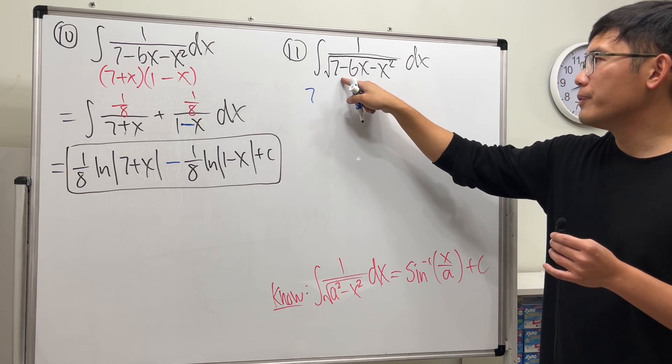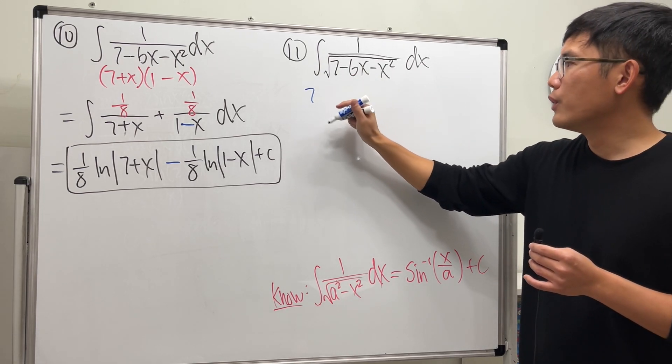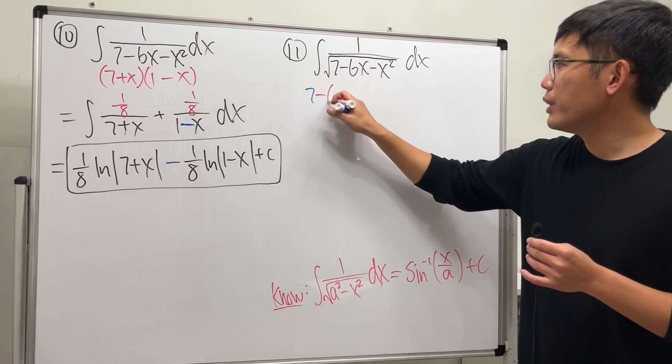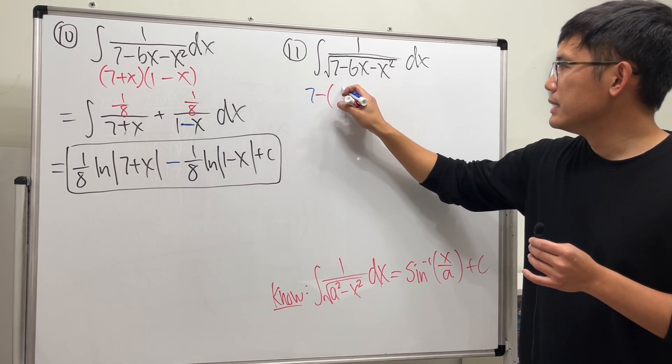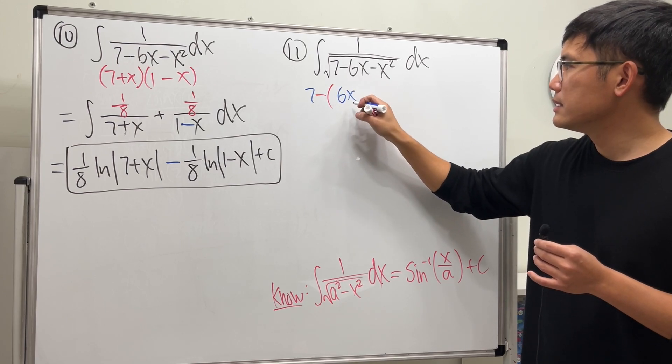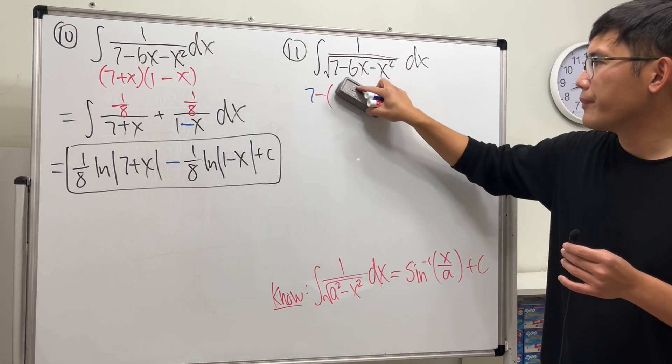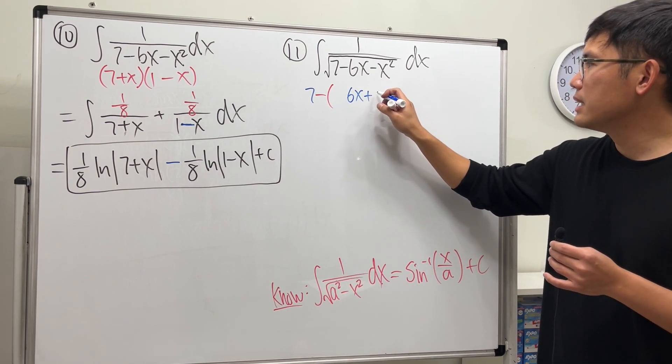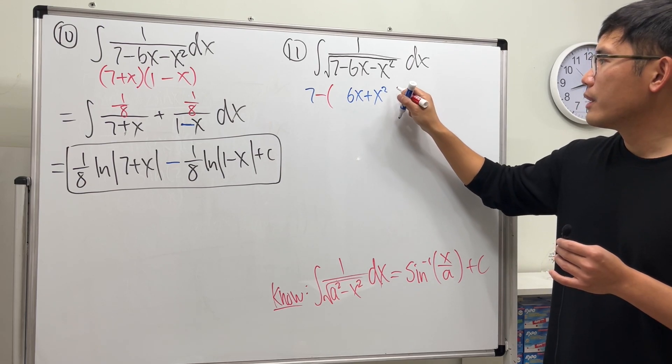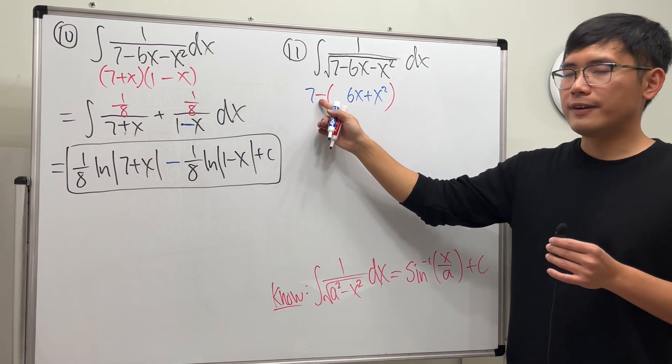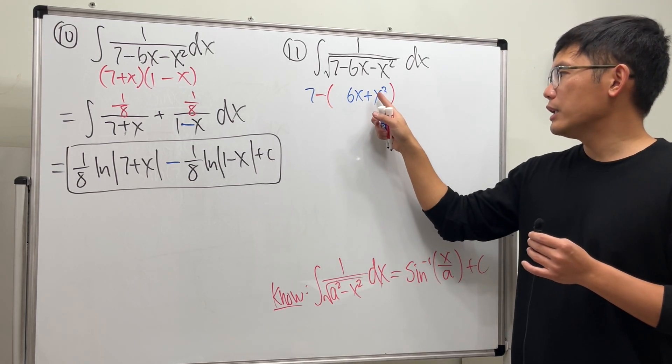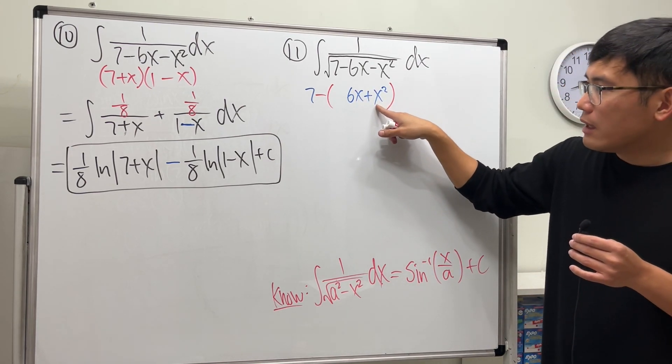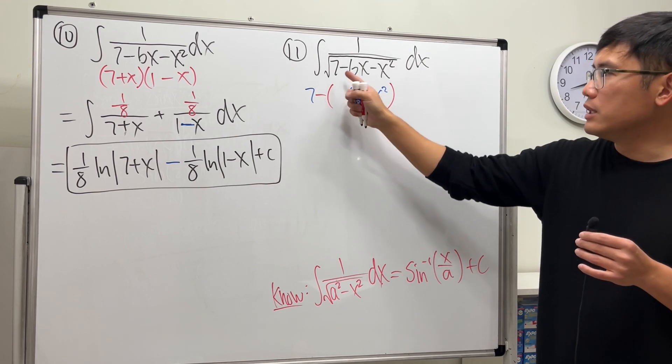So we have minus parentheses, and we get 6x. Let's put it down like this: 7 minus parentheses 6x and then plus x squared. And now why do I bother to factor out negative? Because I like to have the x squared being positive, that's all. When we have this, by the way, this is equivalent to that.